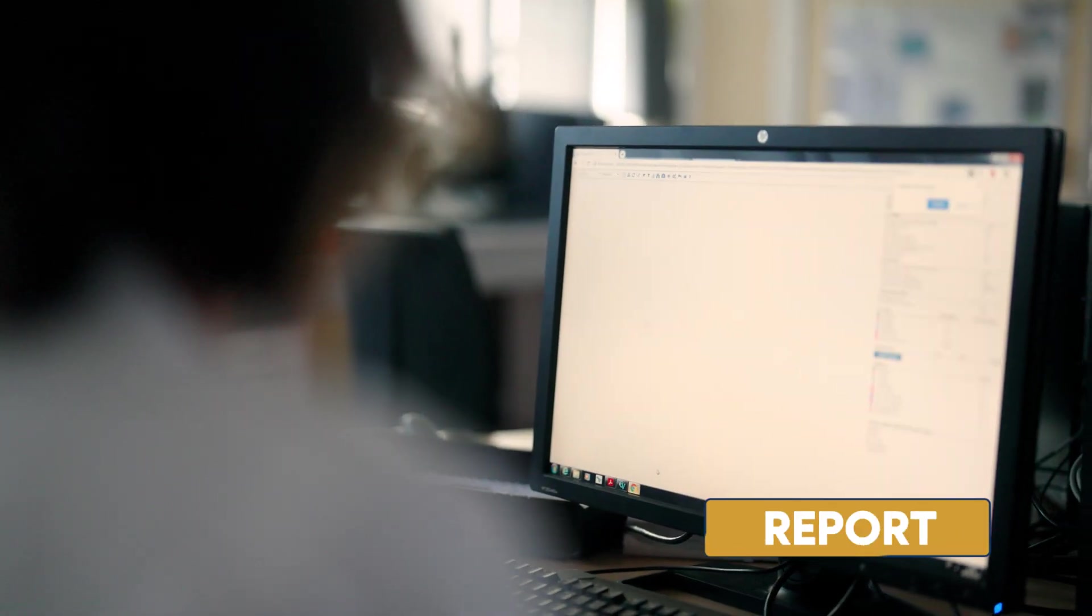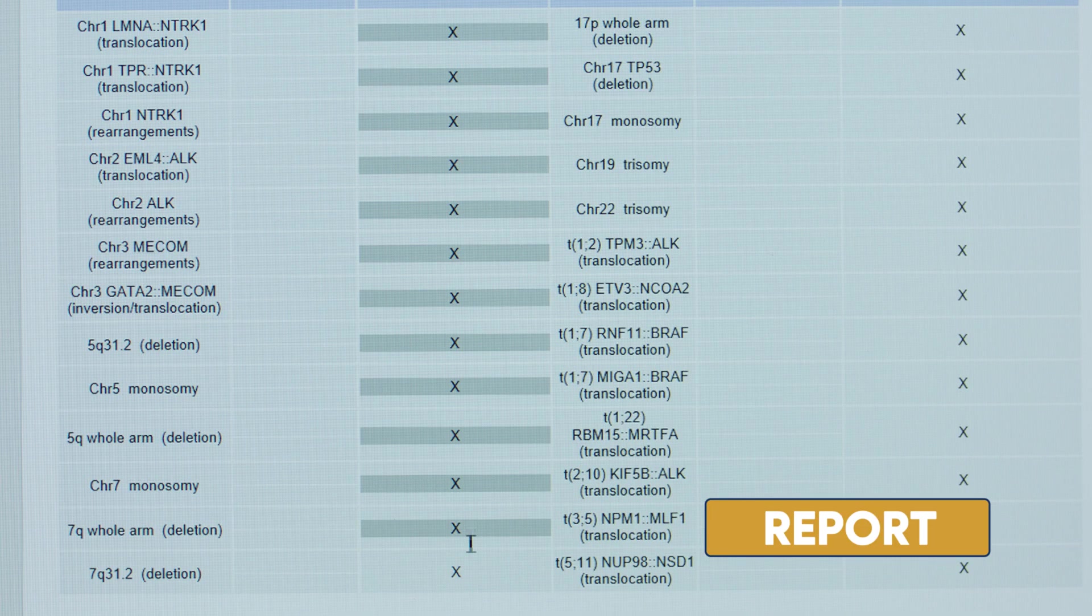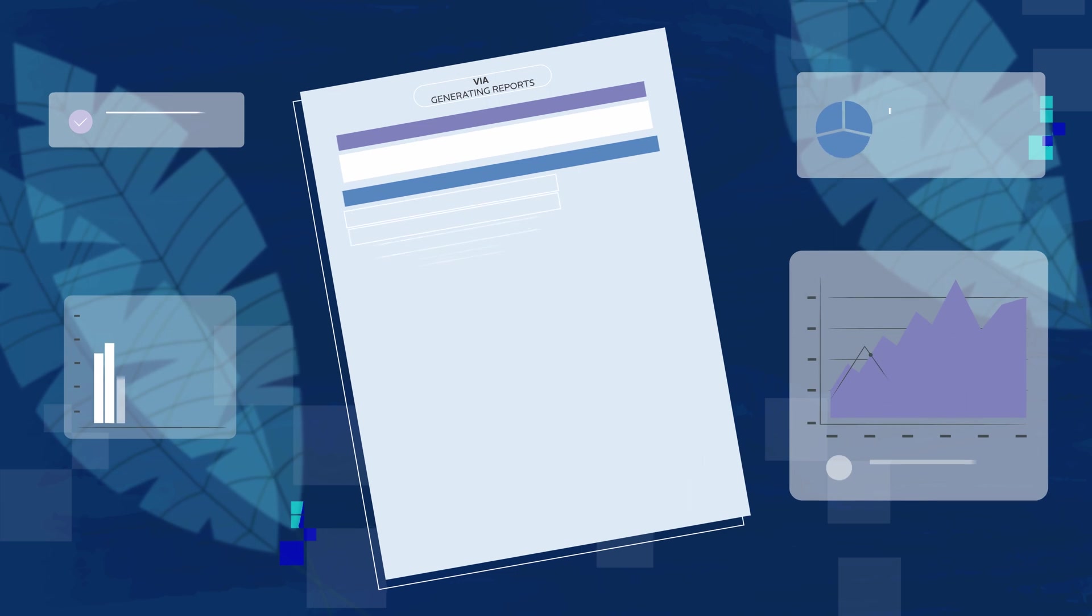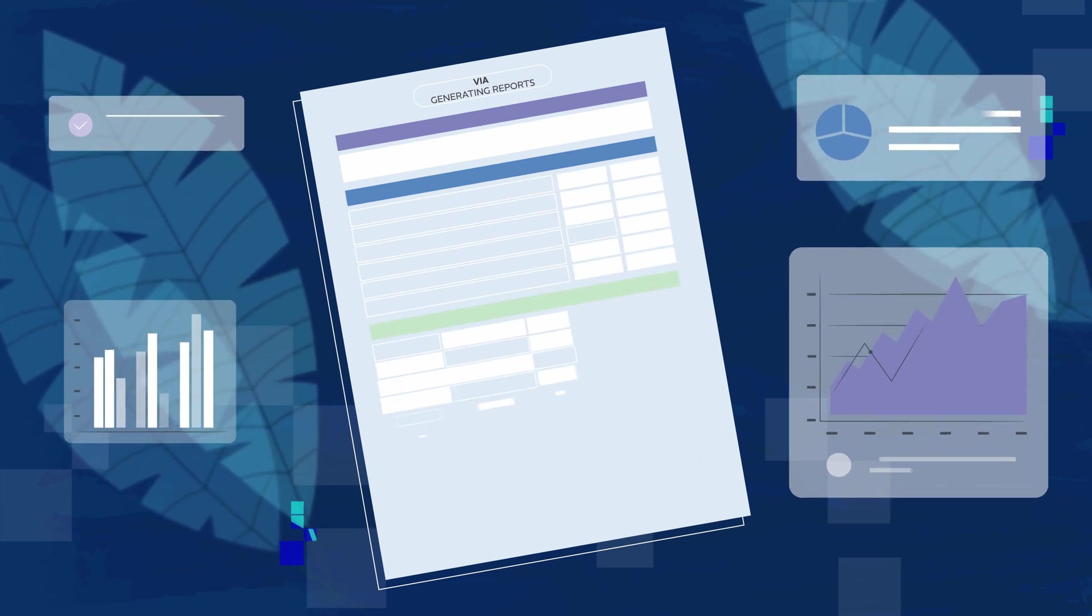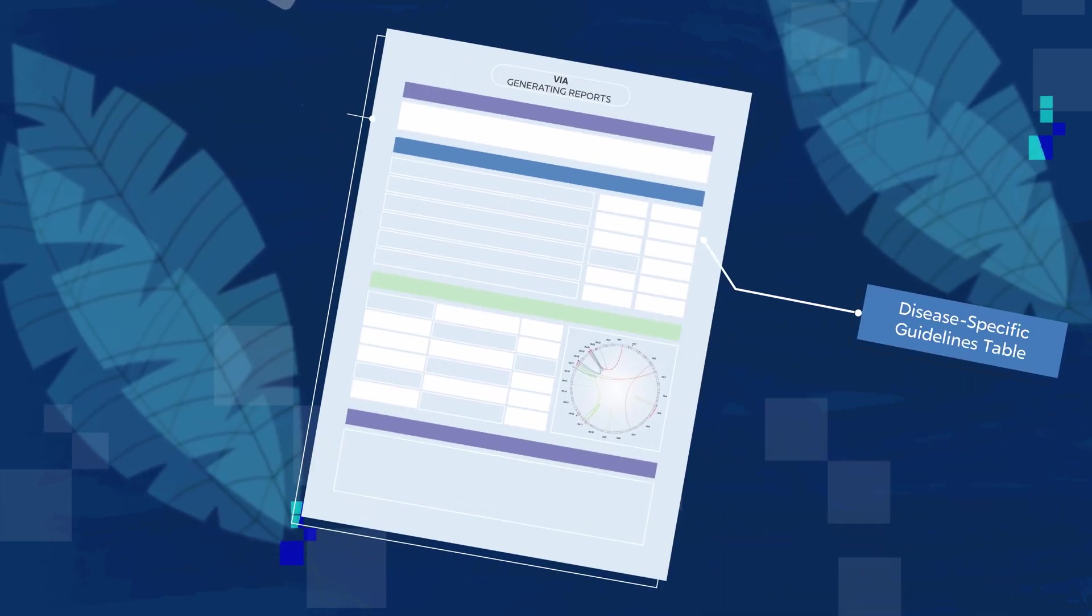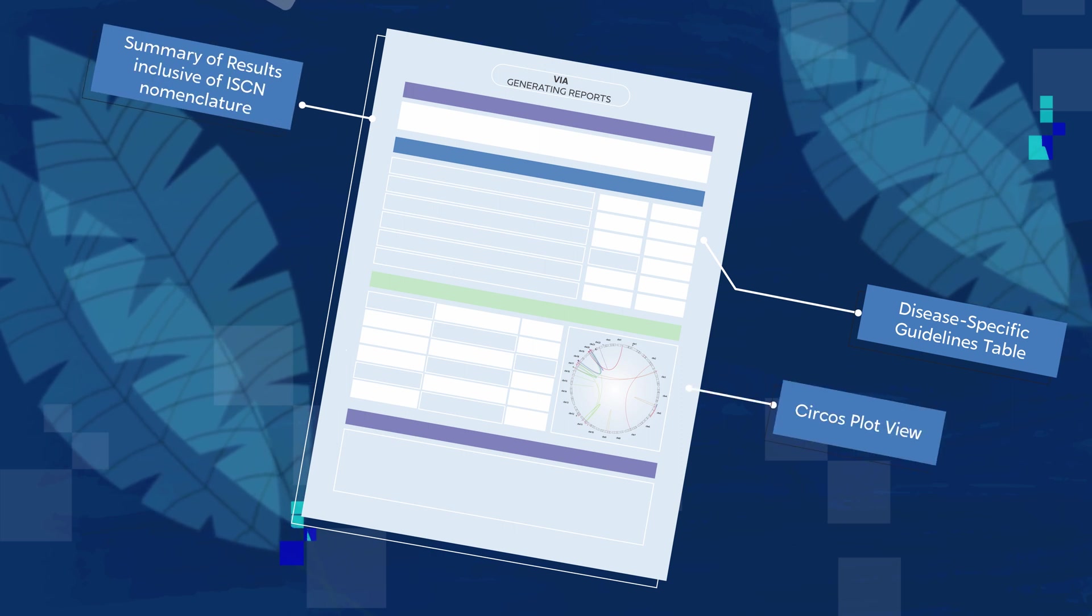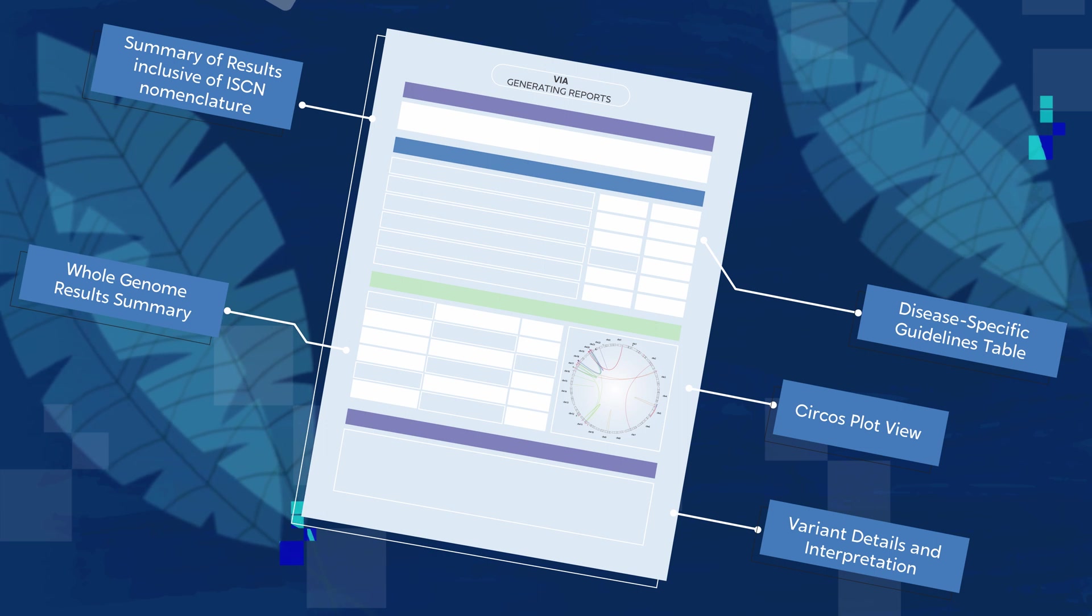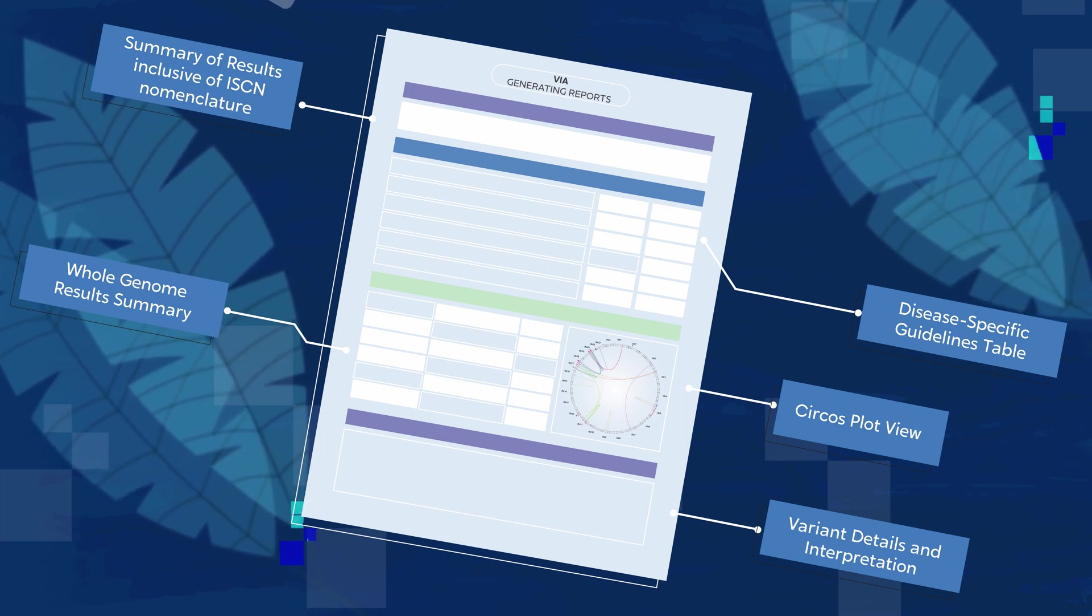Generating reports that summarize meaningful data from cytogenetic analysis can be another complex undertaking. With VIA, you can communicate data with simplicity and clarity thanks to VIA's customizable reporting options. Bring the relevant information to the surface along with visuals and supportive evidence in an easy-to-read, meaningful report.